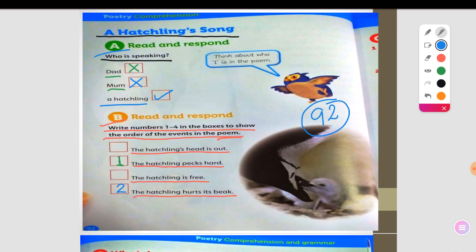So after that, it pecks hard and bites its beak, and then suddenly, what happened? The hatchling's head is out. So let's change the color. The hatchling's head is out. So this is number three.